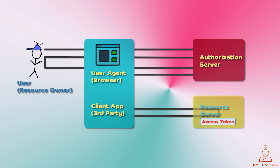The resource server is not explicitly mentioned in the flow, but it is the entity that hosts the protected resources that the application wants to access. In the example above, the Google APIs are the resource servers. The resource server is not involved in the authentication or authorization process — it simply validates the access token and, if it is valid, grants the application access to the requested resources.